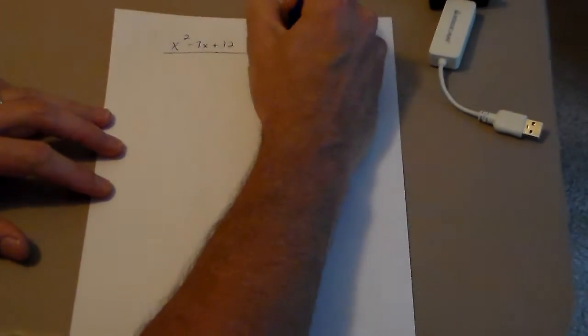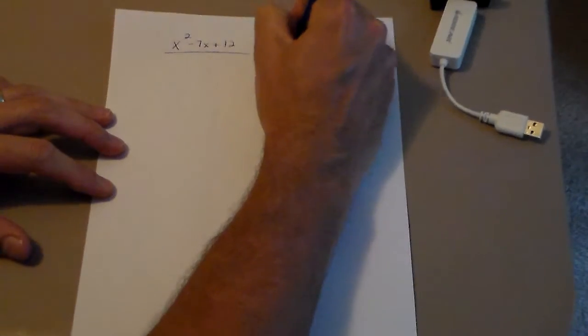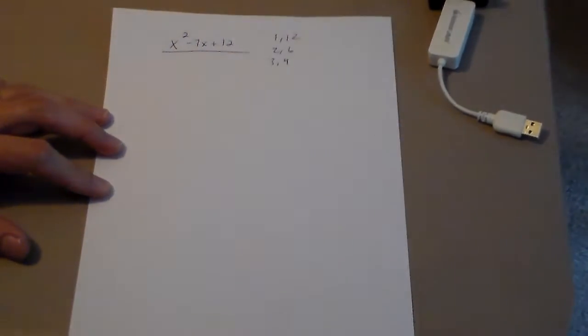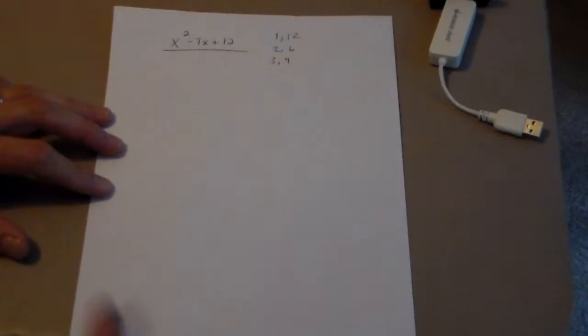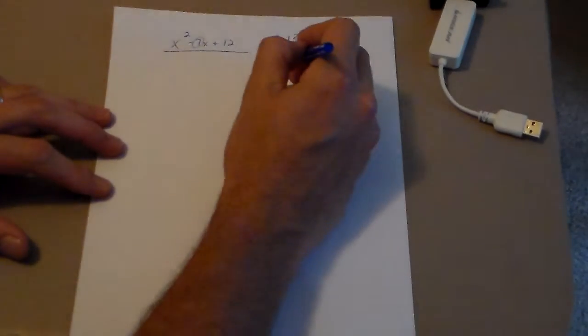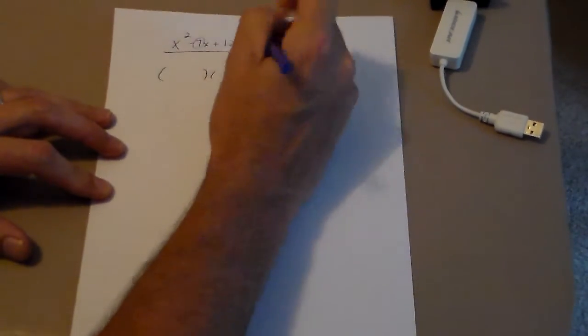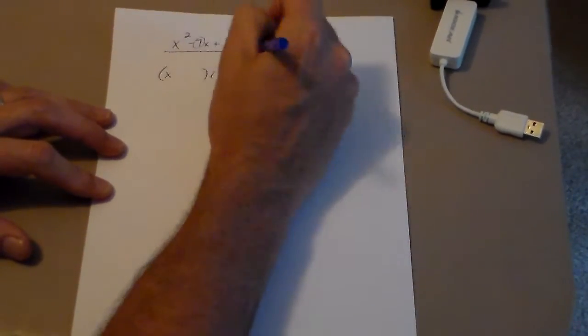Looking at this problem, we need factors of 12 — numbers that multiply to give you 12. Those are: 1 and 12, 2 and 6, 3 and 4. We need the pair that adds to 7, and that's 3 and 4. So I put x and x in the parentheses, and I put 3 and 4.